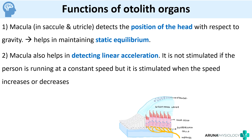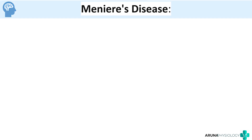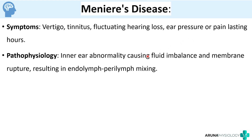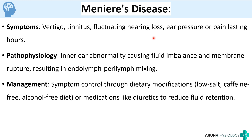The applied aspect is Meniere's disease. This is a condition in which the patient has symptoms like vertigo, tinnitus, fluctuating hearing loss, and ear pressure or pain lasting for hours. The reason is a fluid imbalance and membrane rupture inside the inner ear, causing endolymph-perilymph mixing. Essentially there is an excess of fluid in both the semicircular canals and the utricle and saccule, causing Meniere's disease. For management: dietary modifications such as low salt and caffeine-free diet, avoiding coffee and alcohol, or medications like diuretics to reduce fluid retention, removing that excess fluid from the ear.